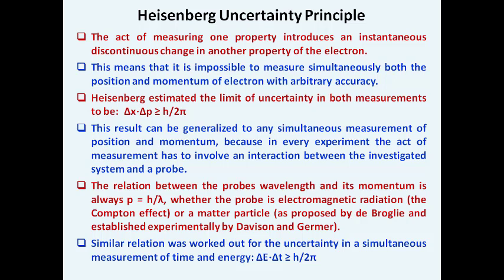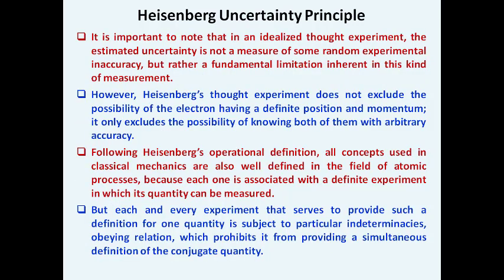The product of error in energy and error in time is greater than or equal to h-bar over 2. It is important to note that in an idealized thought experiment, the estimated uncertainty is not a measure of some random experimental inaccuracy but rather a fundamental limitation inherent in this kind of measurement. Heisenberg's thought experiment does not assume the electron has a definite position and momentum; it only excludes the possibility of knowing both simultaneously with arbitrary accuracy.